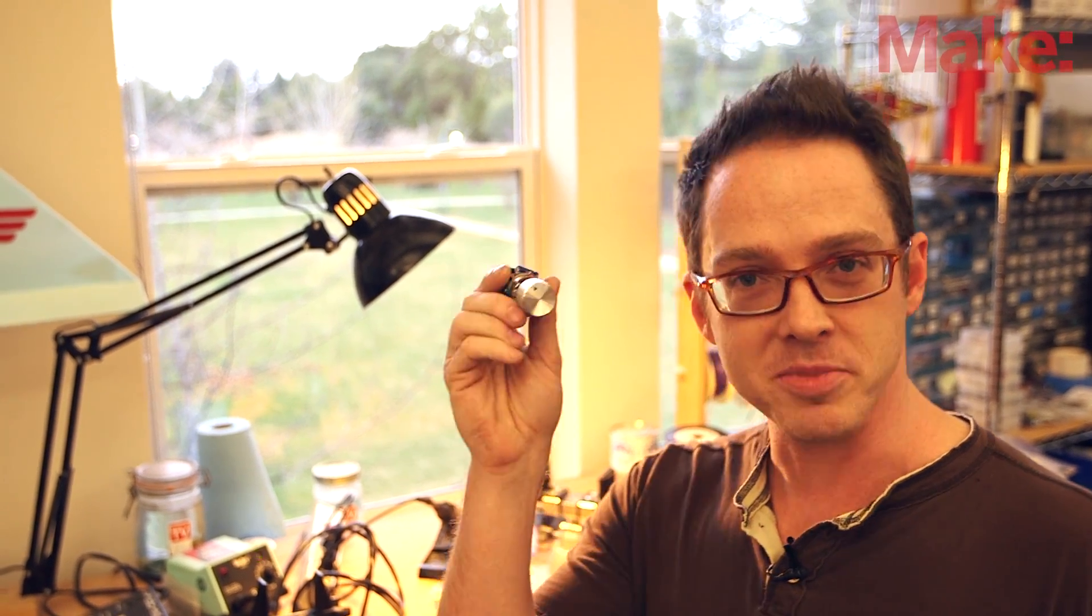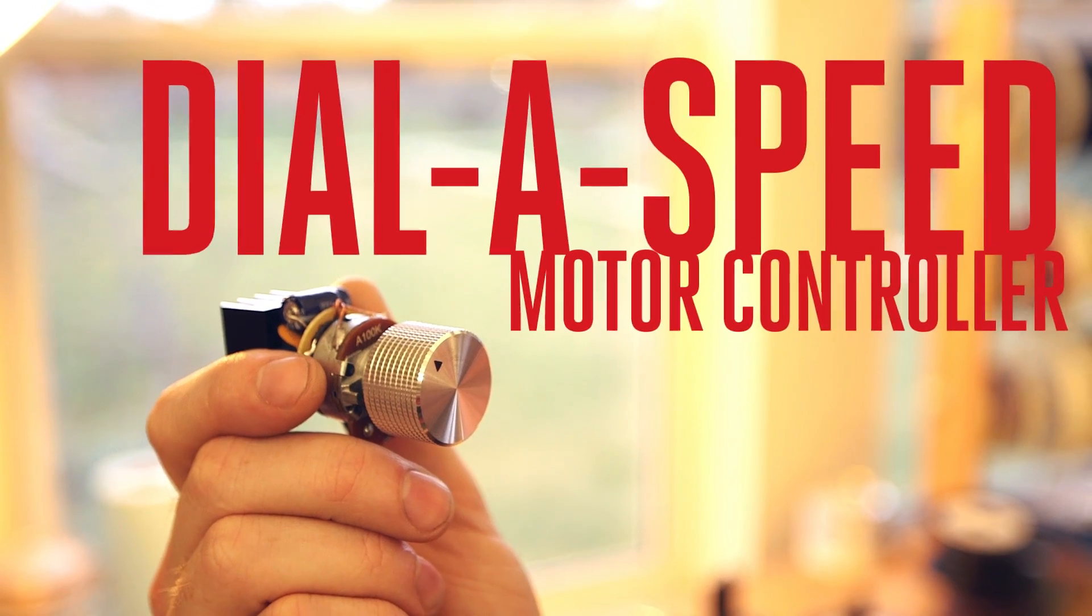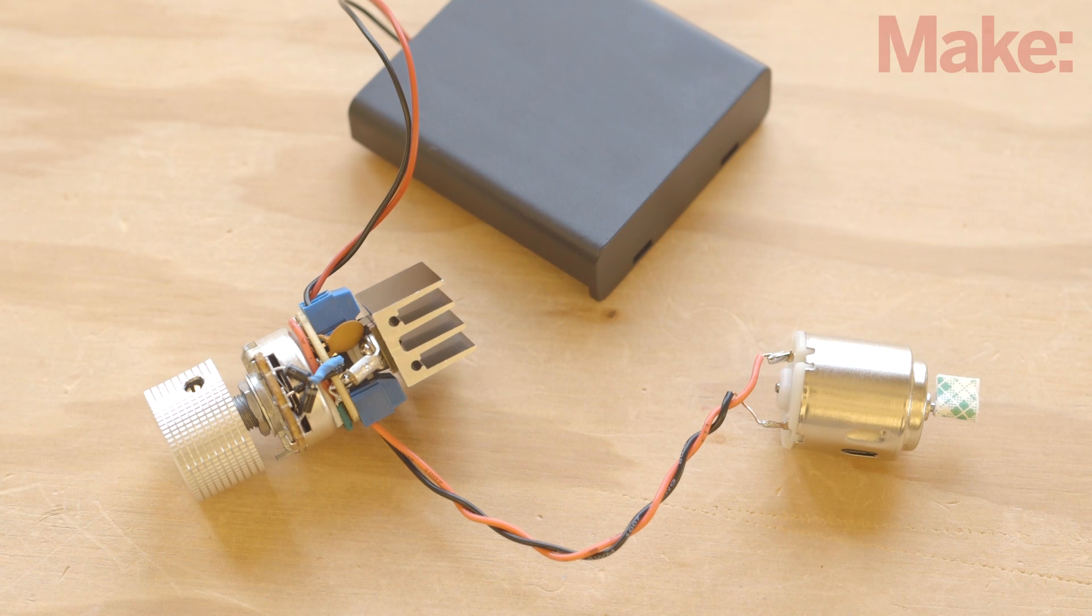In those situations, you'll need an electronic speed controller, which is where this comes in. We call it the dial-a-speed. It can be used with almost any small DC motor or brushless fan that will run at 12 volts or less.